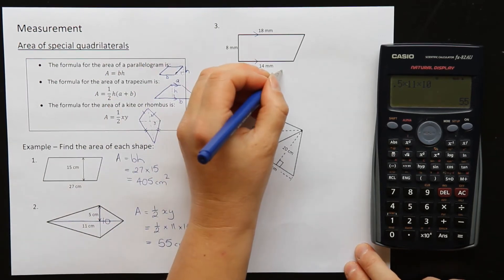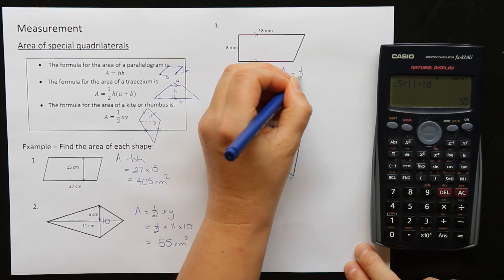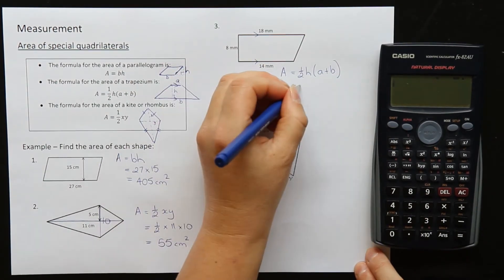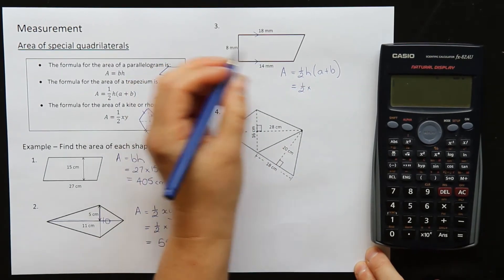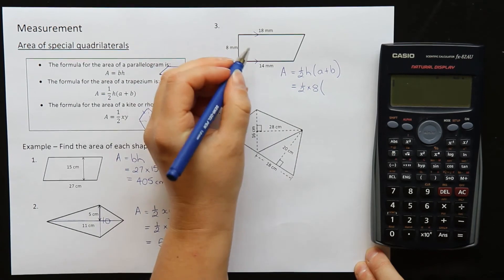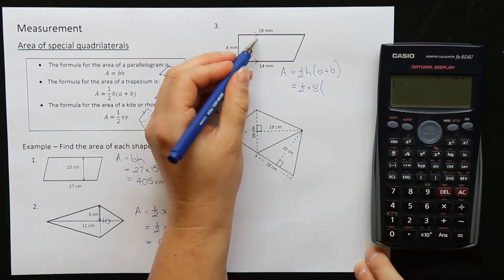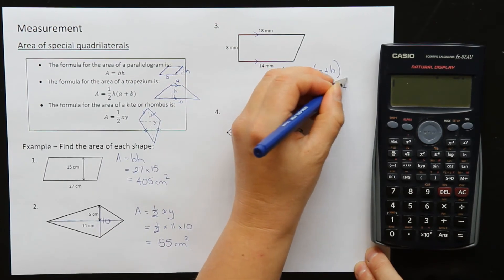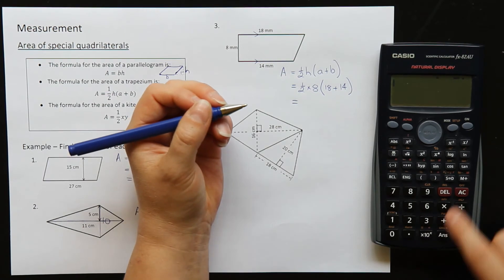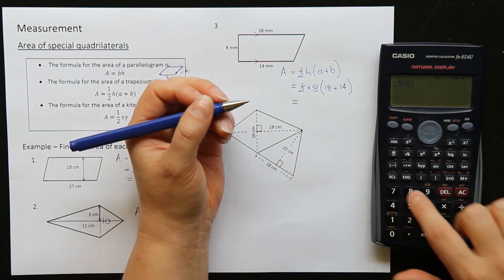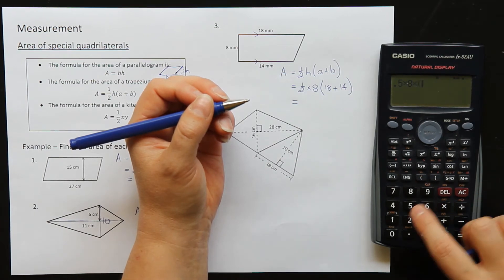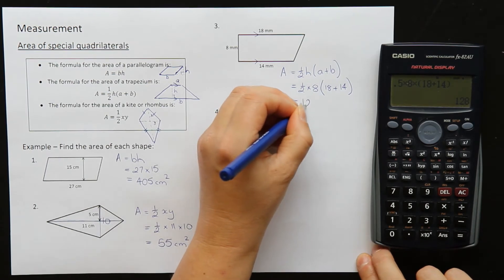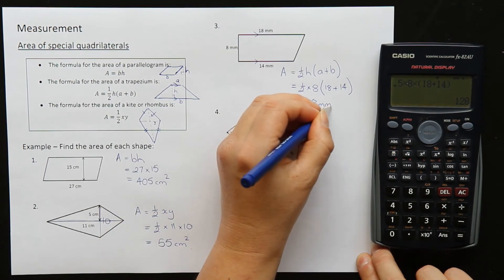So our formula for trapezium is half H bracket A plus B. Substituting into that formula, we have half times by the height which was 8, and then we have a bracket. A and B are these two, doesn't matter which one goes first. I'm going to do 18 plus 14, close bracket. Okay, and then we just need to calculate. Half times 8 times bracket 18 plus 14 is 128 millimeters squared.